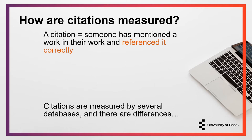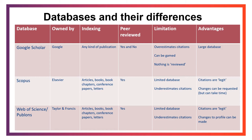Citations are measured by several databases and there are differences between these databases. On the slide, you can see three databases compared: Google Scholar, Scopus, and Web of Science. Google Scholar citations are curated by algorithms, which can cause problems — there have been examples of references in library catalogs being counted as legitimate citations. These issues mean that Google Scholar citation counts can be gamed. In one fairly extreme example, someone added lists of random references to an unrelated website and these were counted by Google Scholar as legitimate citations.